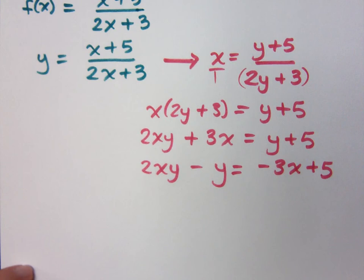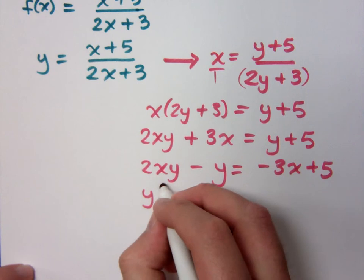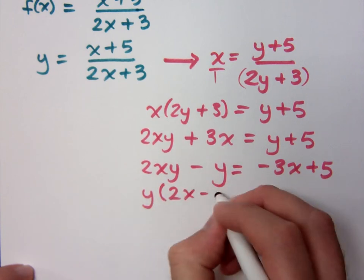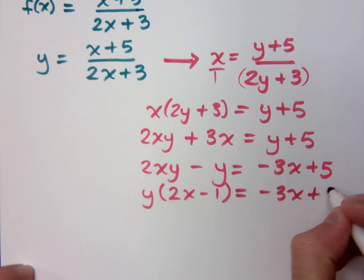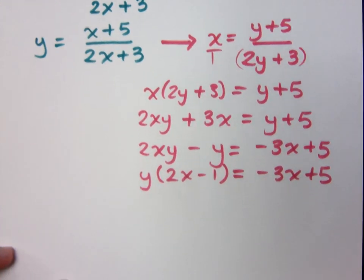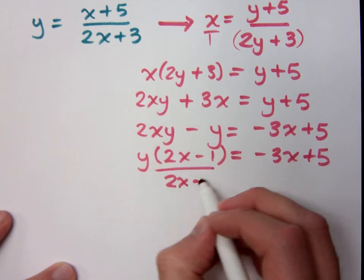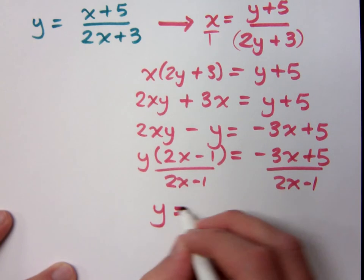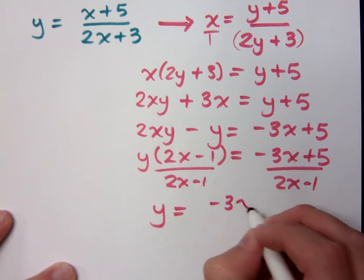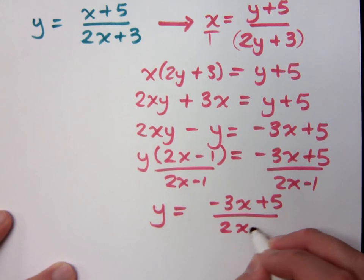The next part is where it gets kind of tricky. You want to get y by itself, so you factor out the y. When I do that, I have y times 2x minus 1. Then to finish getting y by itself, divide by the whole 2x minus 1. So y equals negative 3x plus 5 over 2x minus 1.